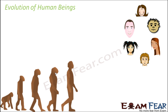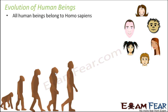No matter how different we look, and no matter which part of the world we live in, all human beings belong to Homo sapiens. We are all Homo sapiens, irrespective of our hair colour, skin colour, or hair shape. But what we are more interested to know is how Homo sapiens originated — how Homo sapiens came into being.